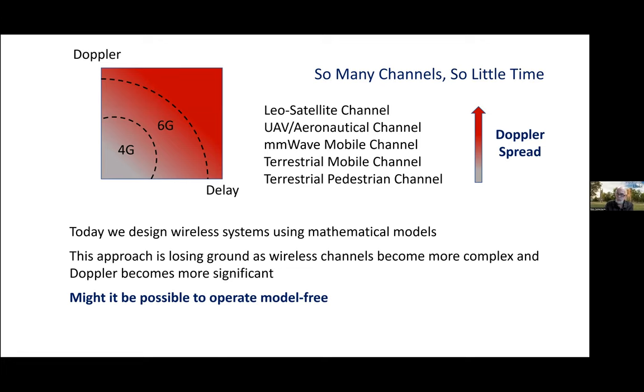So in this slide here, I've made a list of channels where the Doppler spread ranges from next to nothing for terrestrial pedestrian channels, to say 300 hertz for terrestrial mobile channels, maybe three kilohertz for millimeter wave mobile channels.